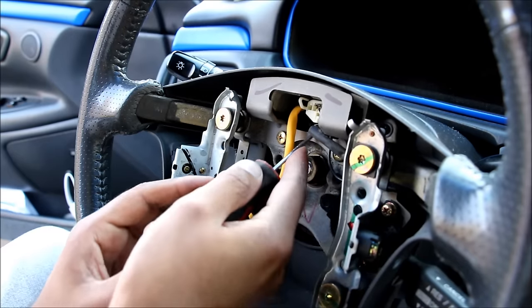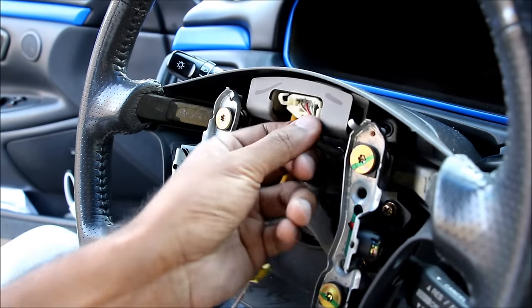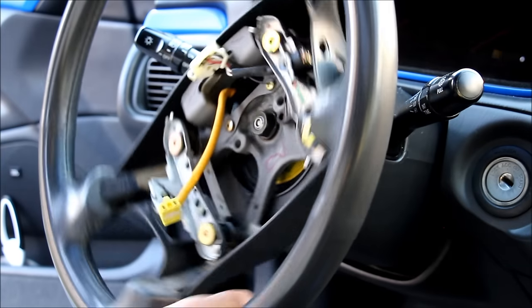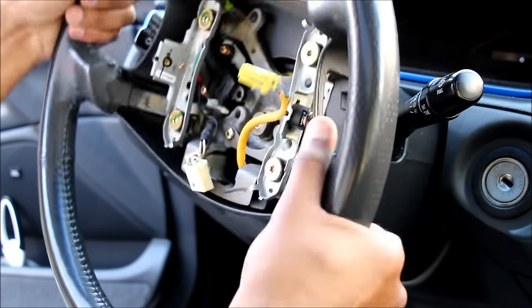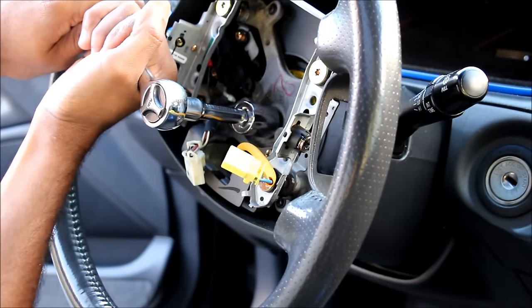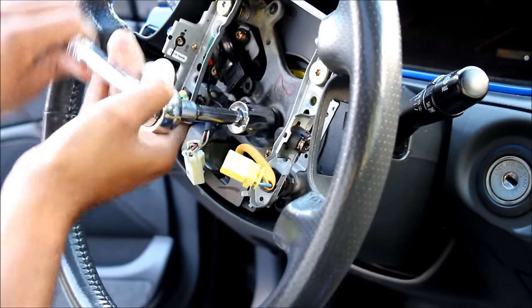Next I'm going to use a screwdriver to pry up on this little tab for this connection to the cruise control. Next I'm going to lock the steering wheel by turning it until it clicks. Then I'm going to use a 19mm socket with a 3 inch extension to loosen the nut in the middle.